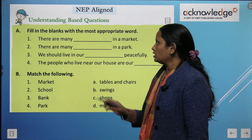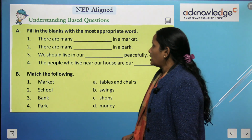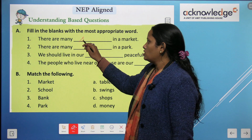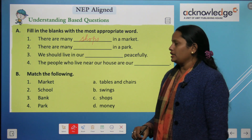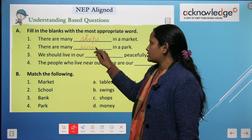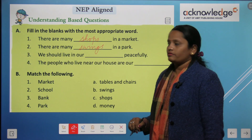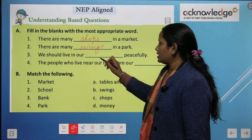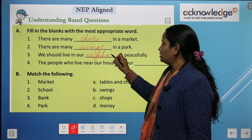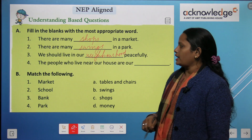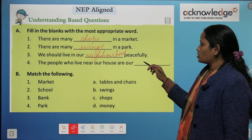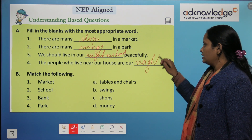Now let's fill in the blanks. There are many shops in a market. There are many swings in a park. We should live in our neighborhood peacefully. The people who live near our house are our neighbors.